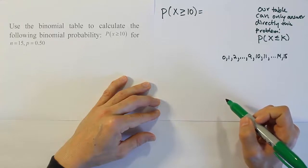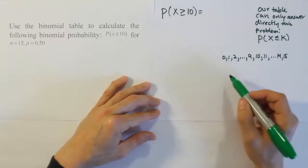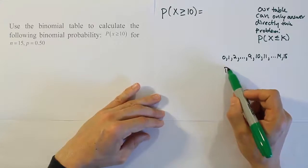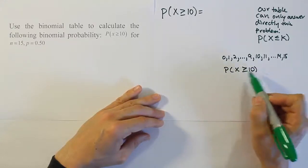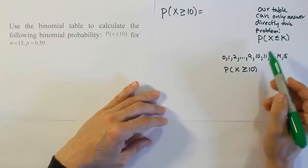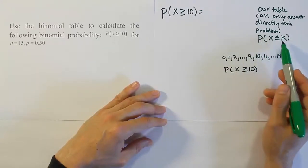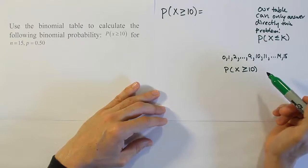So let's talk about the scenarios where you're looking at different things like the probability for example that x is greater than or equal to 10. In order to answer that question, you can't do it directly because the table only gives you from a number you look up down to 0, right?